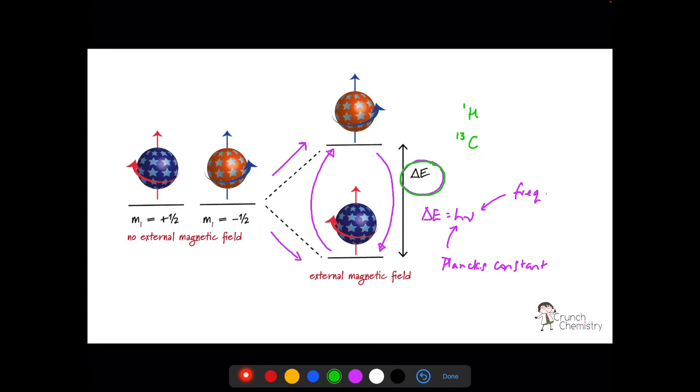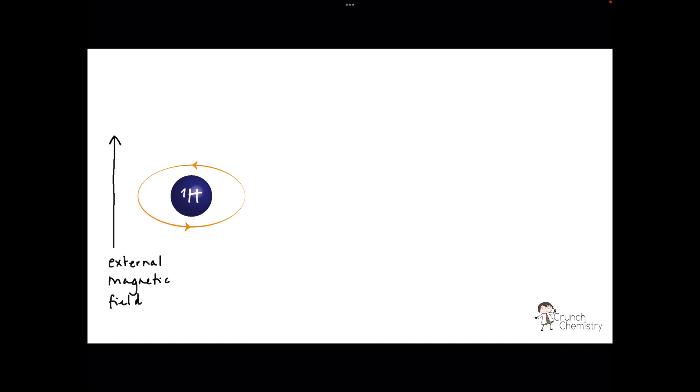However, it turns out that not all hydrogen nuclei or carbon-13 nuclei in a molecule experience exactly the same magnetic field. So they don't all absorb the exact same frequency of radiation or energy to come into resonance. What we're actually saying is that the magnetic field experienced by a nucleus is not exactly equal to the external magnetic field applied to the sample.